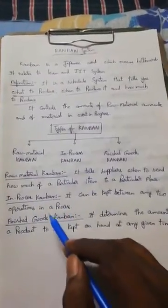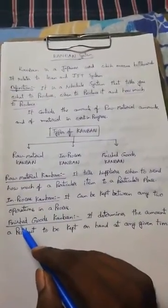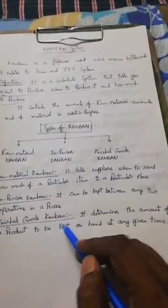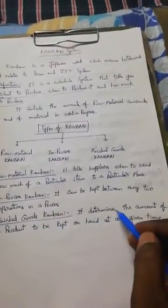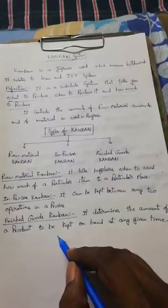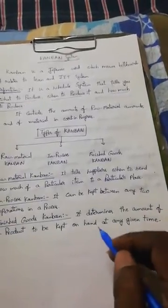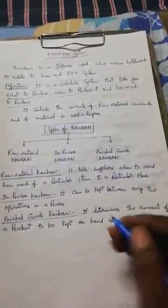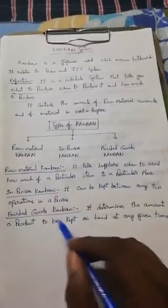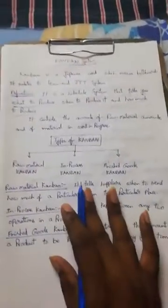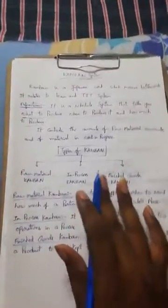The third category is Finished Goods Kanban. This type concentrates on the amount of product to be kept within a given time, meaning how much time is required for the completion of the finished goods. These are the three parameters considered under Kanban.